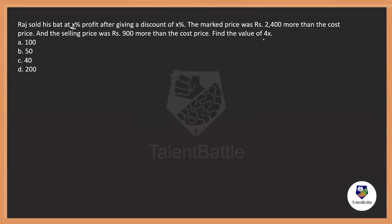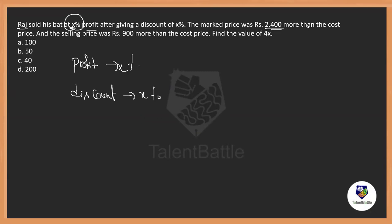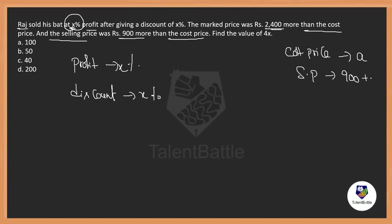This is a question from the concept of profit and loss. The major thing you need to understand is what terminologies are given and what information is provided. Raj sold a bat at X percentage profit, and the discount offered is also X percentage. The marked price is 2400 more than the cost price, and the selling price is 900 more than the cost price. If we imagine the cost price is A, then SP = A + 900 and MP = A + 2400.